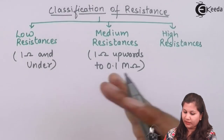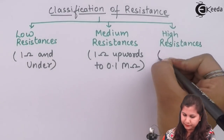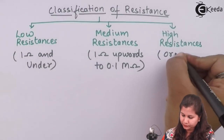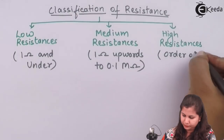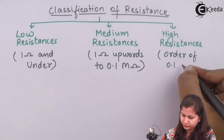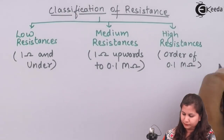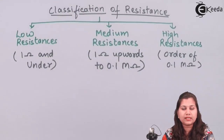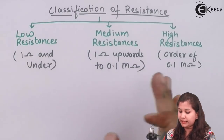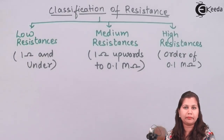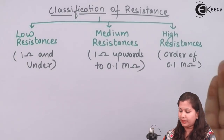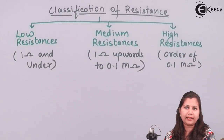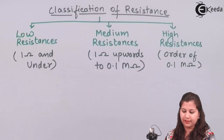Then we have high resistances. All resistances whose values are greater than 0.1 mega ohm are called high resistances.